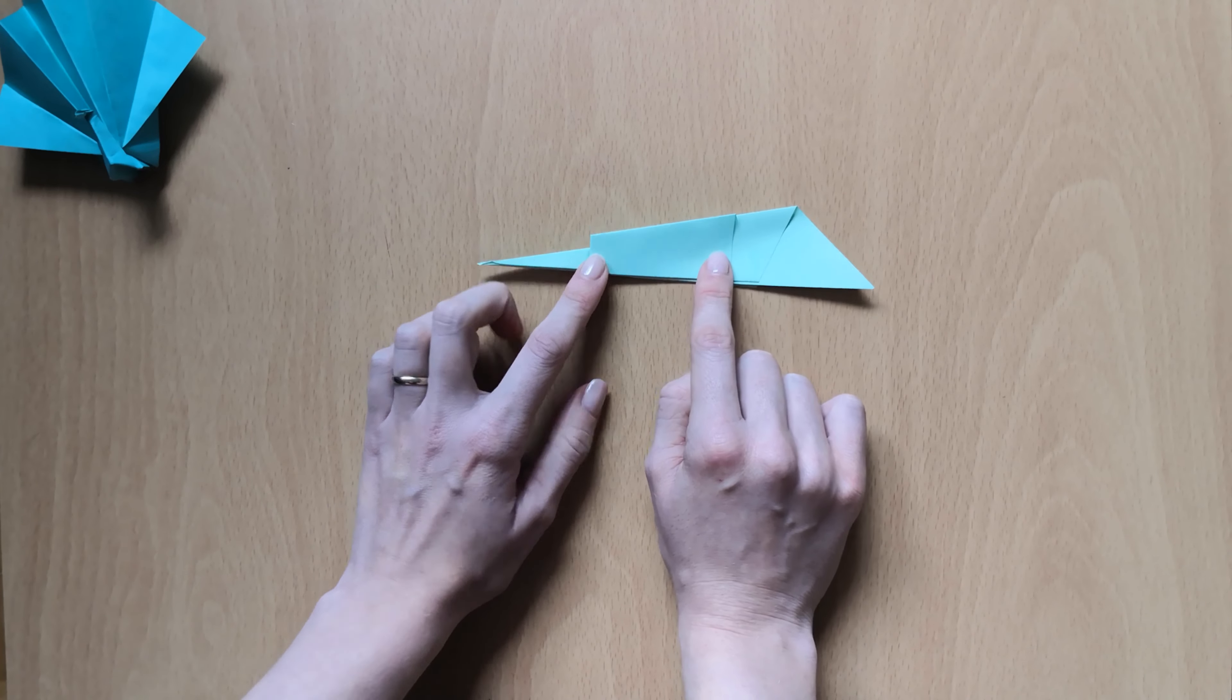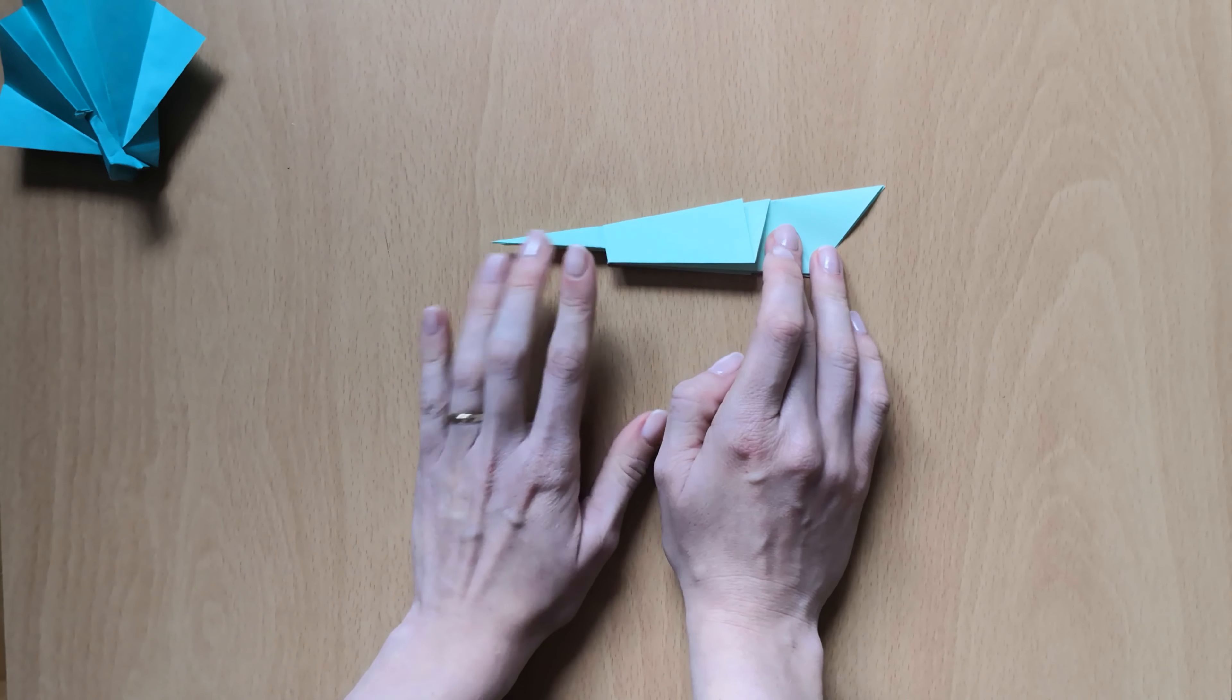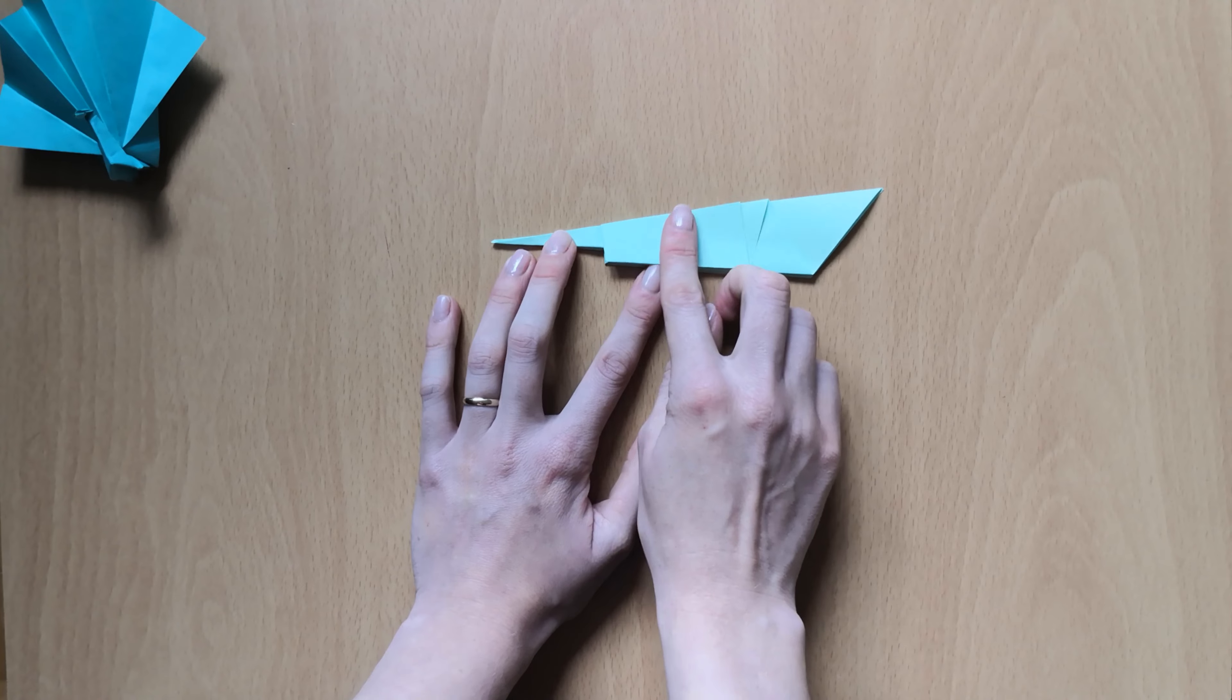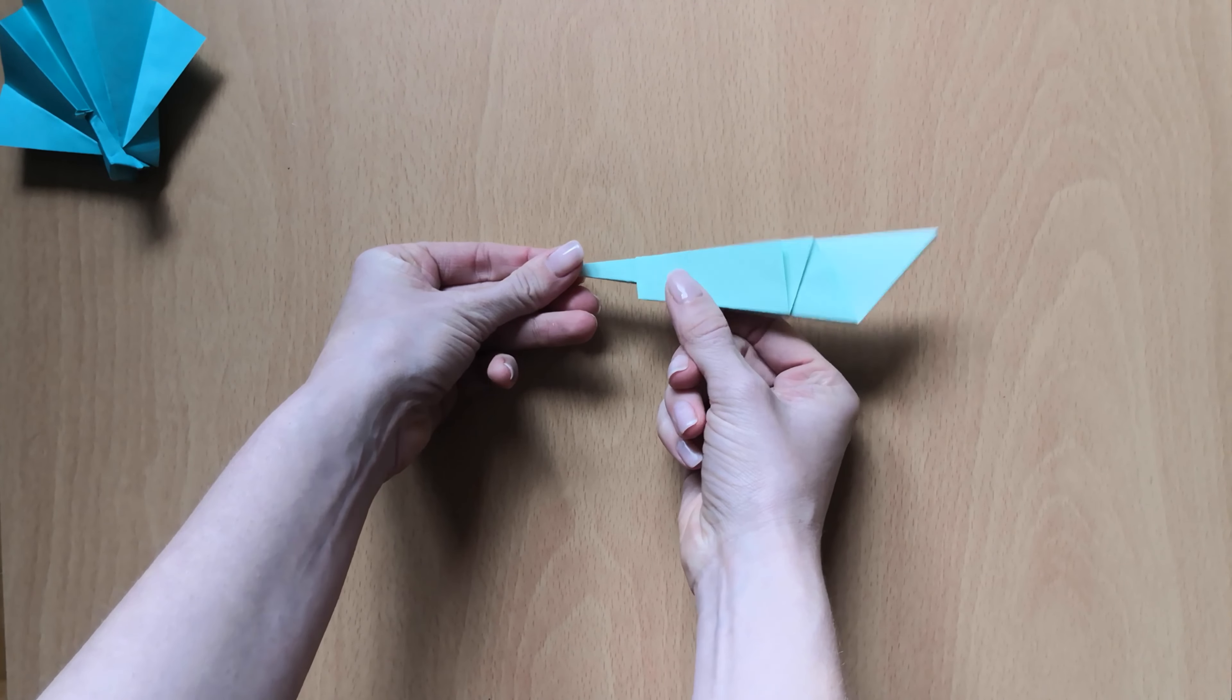Now we'll flip our paper over. So just flip it over that this upper layer is open in that direction. And next step, we'll hold our paper right here.